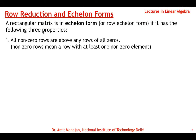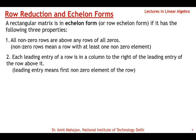The first property is that all non-zero rows are above any rows of all zeros. If a matrix has any row with all elements zero, those rows must be at the bottom. There should not be any row with non-zero elements below a row of zero elements. A non-zero row means a row with at least one non-zero element.